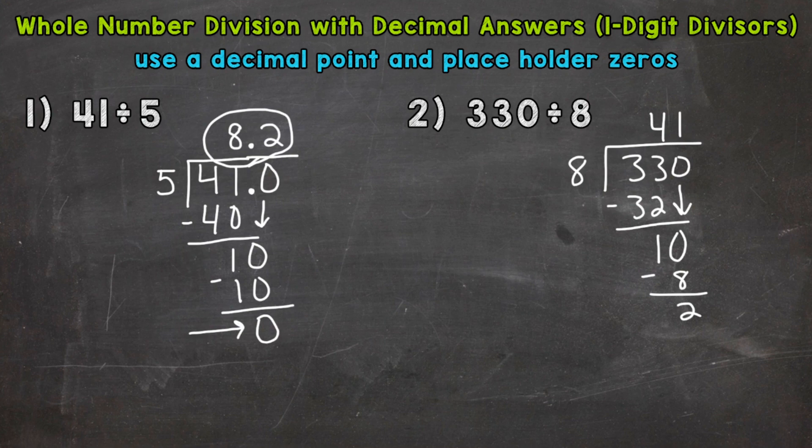So 41 remainder 2 is our answer. But again, we want decimal form. So what we do, we place a decimal after the whole number, bring that straight up into our answer, and we use placeholder zeros to continue the process until we get a clean cut zero. Bring this zero down so we can continue.